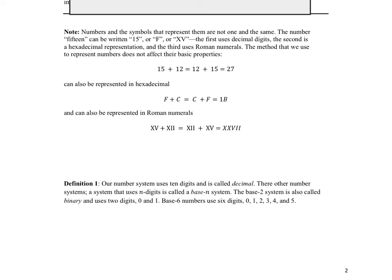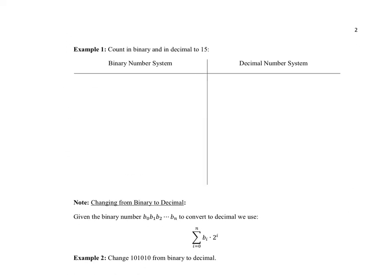There are other situations where other number bases are very helpful. The number base system you're most familiar with is the decimal number system — that's what we call base 10. People probably decided to use base 10 over time because there are 10 things sticking out of our hands for most people. The base 2 system is what we're talking about as binary. In binary, there are only the digits 0 and 1 available to us, whereas in the decimal system there are digits all the way from 0 to 9.